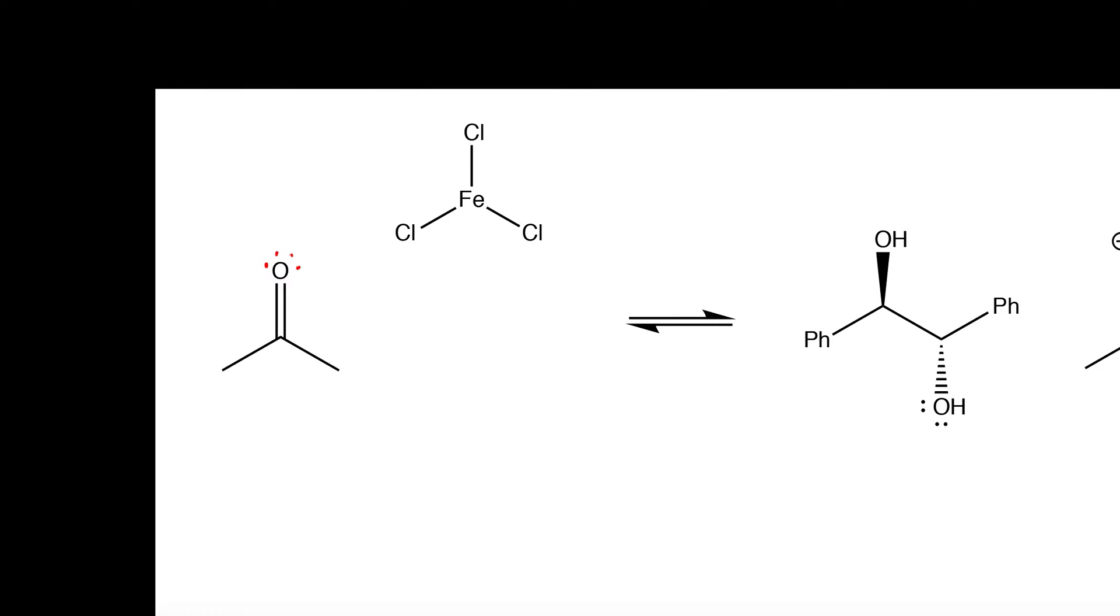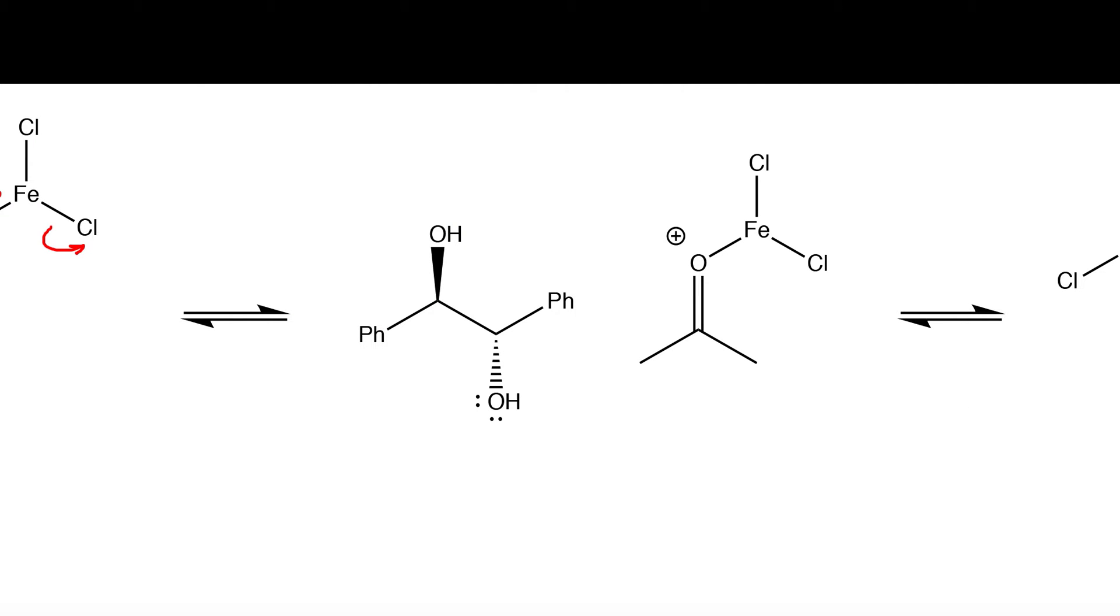Acetone in this scenario functions as a Lewis base and will donate its electrons to the iron. What happens next is we kick out one of these chlorines. The result of that step is this intermediate right here.